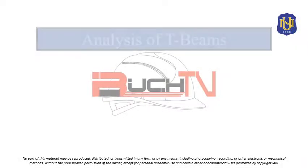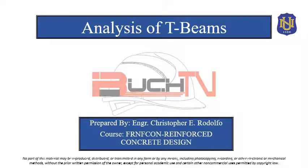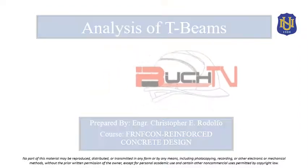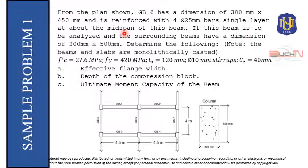Let's continue on the sample problems for the analysis of T-beams, still for reinforced concrete design. For sample problem number one, from the plan shown, GB-6 has a dimension of 300mm by 450mm and is reinforced with 4 diameter 25mm bars in a single layer at about the mid-span of this beam. If this beam is to be analyzed and the surrounding beams have a dimension of 300mm by 500mm, determine the following.